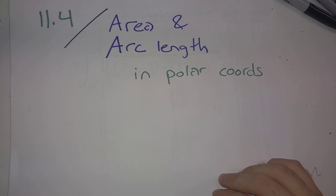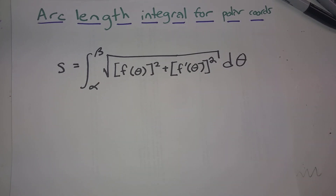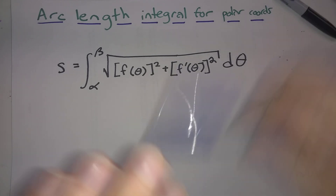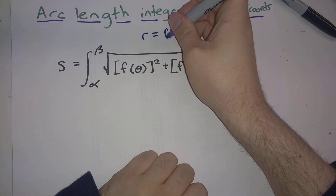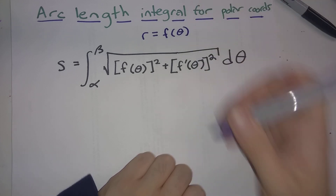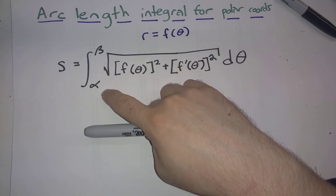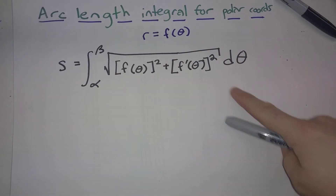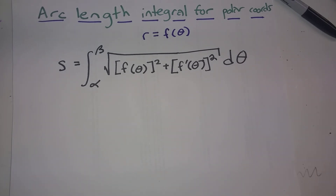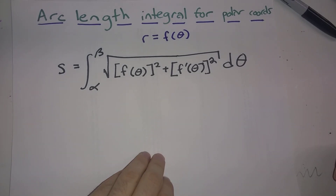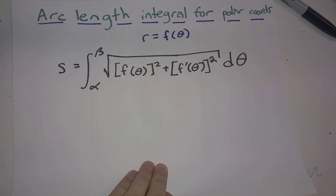This section covers area and arc length in polar coordinates. We have not yet talked about arc lengths, so it's time to do that. Here is the arc length integral for polar coordinates. If you have r as a function of theta, and you're letting theta run from alpha to beta, this is the integral that you should come up with. Let's see where this comes from, and then we will do an example using it.